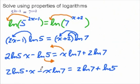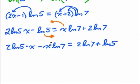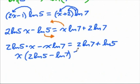And now that we have x's on the same side of the equation, you factor it out. And we'll have left over 2 ln of 5 minus ln of 7 is equal to the other side, 2 ln of 7 plus ln of 5.